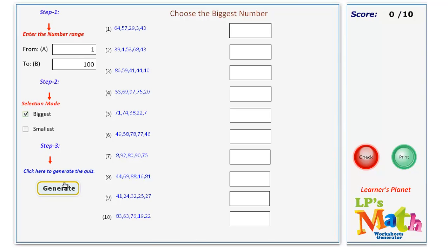If you wish to choose the smallest number, again enter the number range, select smallest, and click to generate.